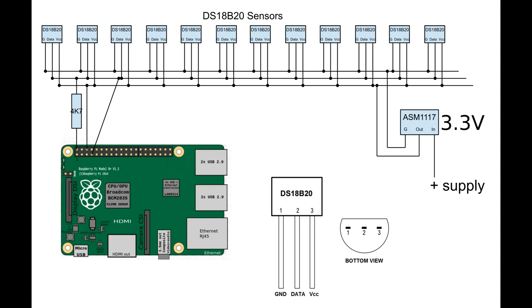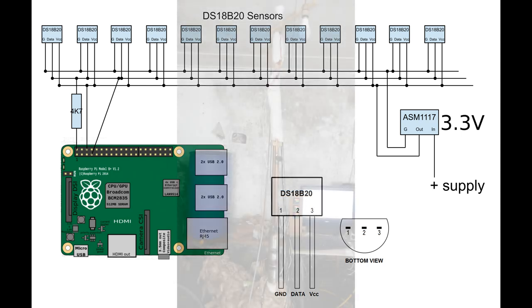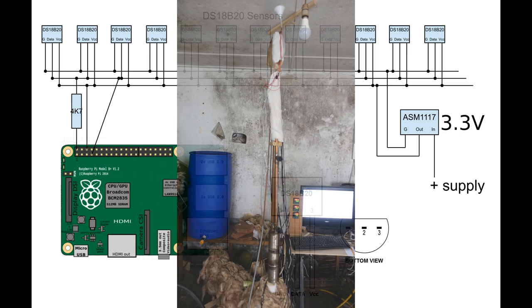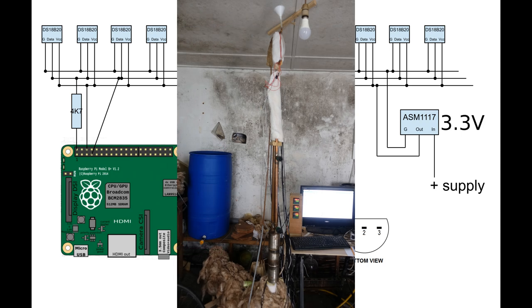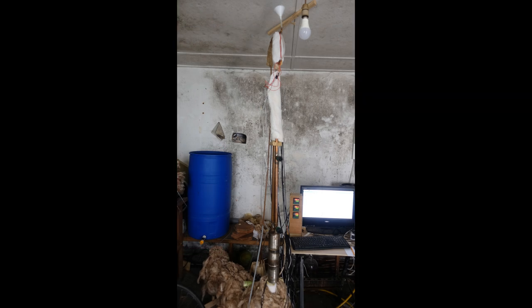Lagging 2 was with half an inch of lagging around the whole rectifying column, and lagging 1 was with bare copper pipe for the lower half of the rectifying column and half an inch of lagging for the top, as shown here. In all cases the stripping column was fully lagged with 4 inches of glass fibre.